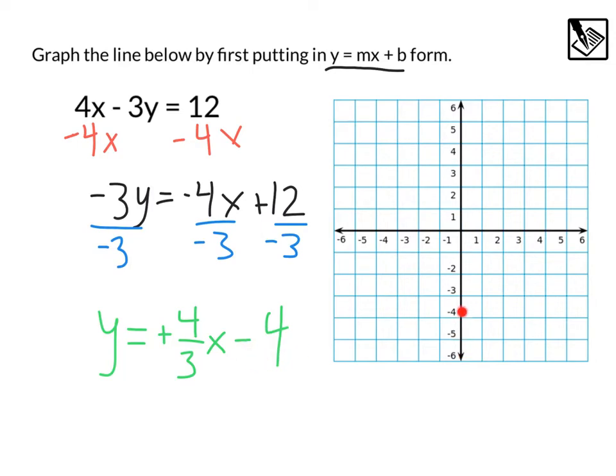Our y intercept is at minus 4, using our slope, positive 4 over 3, that's up 1, 2, 3, 4 over 1, 2, 3, and that's going to give us a nice, beautiful line, right about there. Anyway, whenever we have a linear equation, to make it easier on ourselves, we're going to solve for that y and put it into that form.